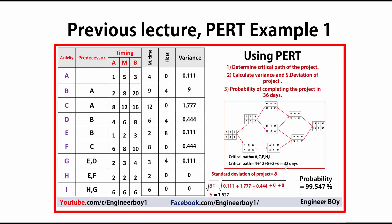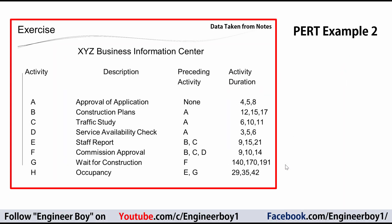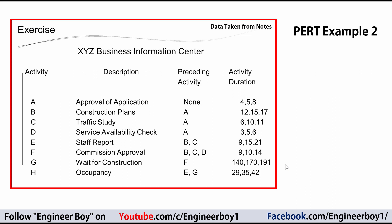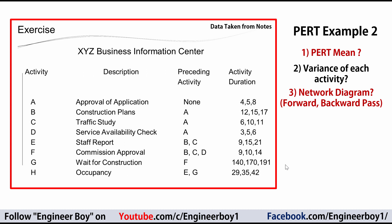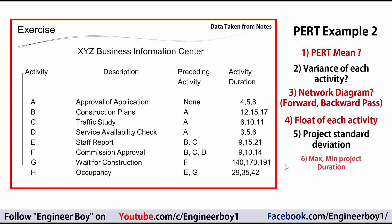Previously on this channel, a solution was given to Example 1 where the PERT technique was used to determine the critical path, variance, standard deviation, and probability of completing a project in 36 days. Now we are taking another example — Example 2 — which was given by our teacher in a quiz. The task is to work out the PERT mean duration, variance of each activity, the network diagram, forward and backward pass, float of each activity, project standard deviation, and the maximum and minimum project duration.